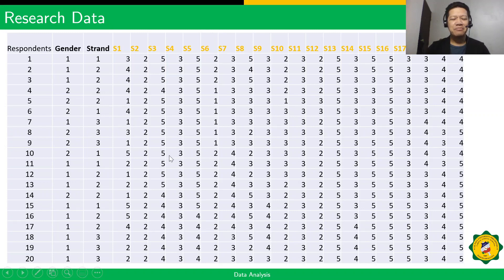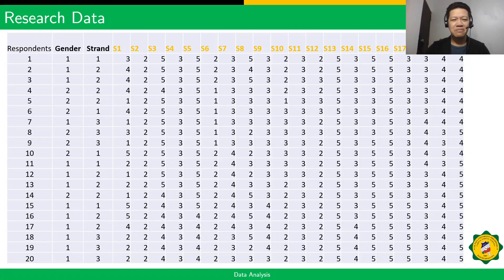We already gathered data using the questionnaire. To organize the data in Microsoft Excel, the first column is the respondent number. You label your questionnaires 1 up to the total number of participants — let's say up to 20. You also include profile variables such as gender and academic strand, and you need to do coding for those: 1 for male, 2 for female. For strand: 1 for STEM, 2 for ABM, and 3 for Humss.